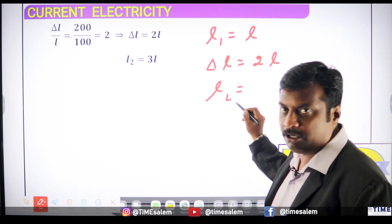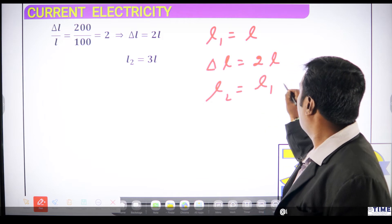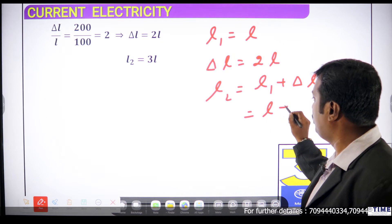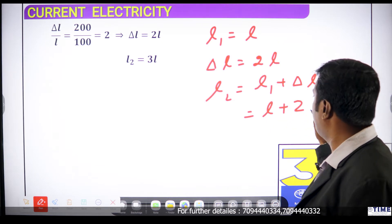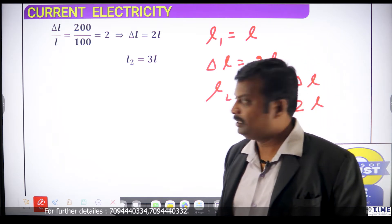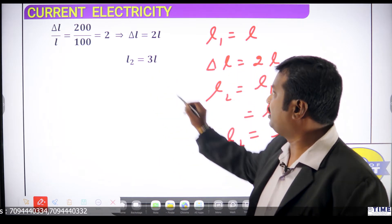What is L2? L2 will be L1 plus del L. What is L1 plus del L? L1 is L. Del L value is 2L. L plus 2L is 3L. L2 value is 3L.